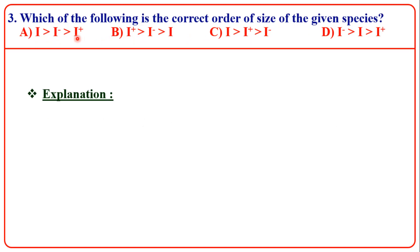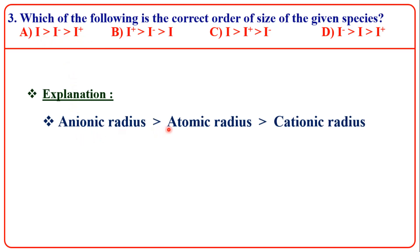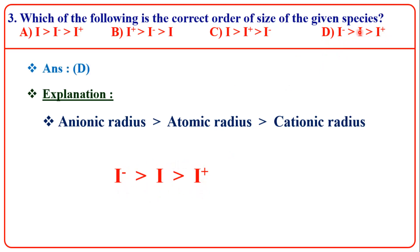The next question gives three species: atomic radius, anionic radius, and cationic radius. If we compare them, already we know anionic radius is greater than atomic radius, and atomic radius is greater than cationic radius. So the correct order of size is I⁻ greater than I greater than I⁺. The answer is D.